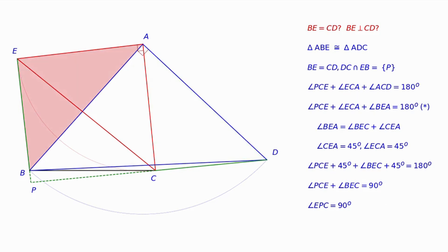In other words, EP and CP are perpendicular and so are the lines BE and CD.